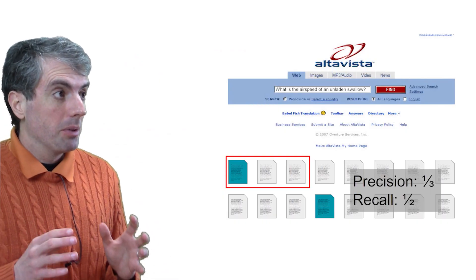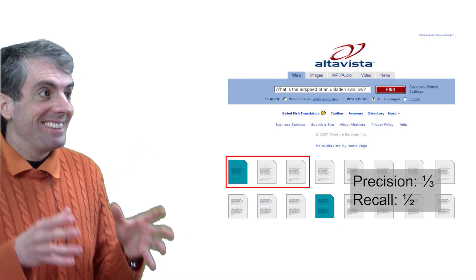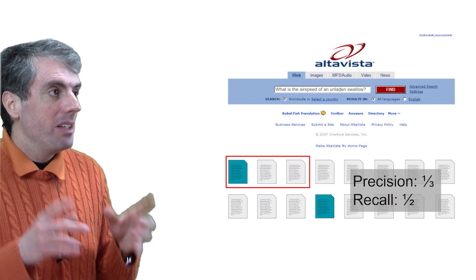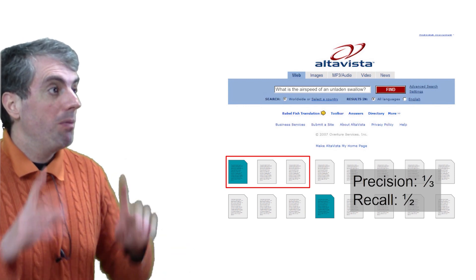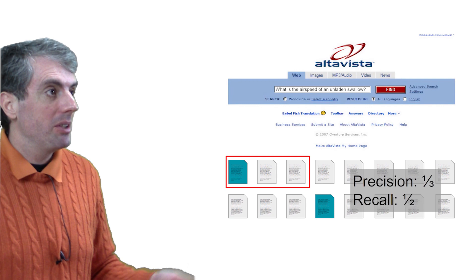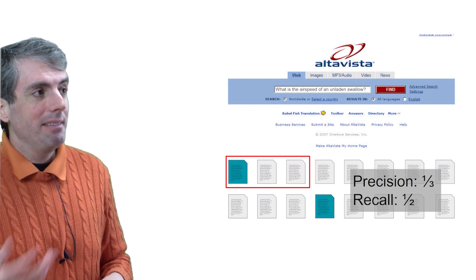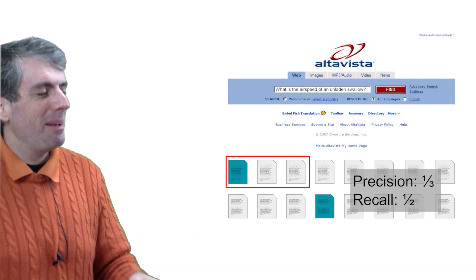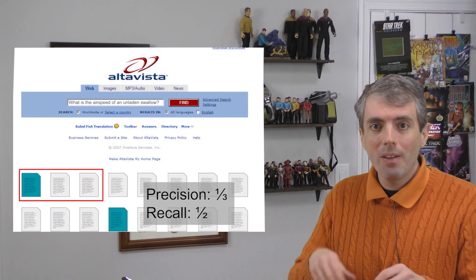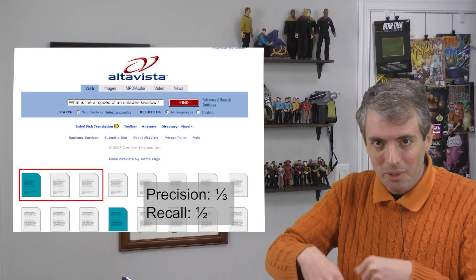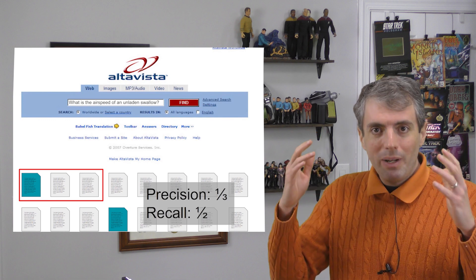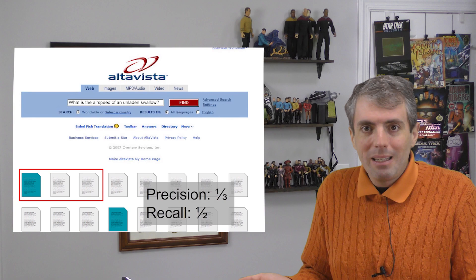At the risk of sounding like a broken record, I want to emphasize just how revolutionary this was. Once you found the relevant documents, you could evaluate any system. Before, you had to run an expensive user experiment every time you tweaked your systems. With a reusable test collection, you could turn the crank on your retrieval system without pesky humans getting in the way and slowing things down — just check whether the red box finds the relevant documents or not.